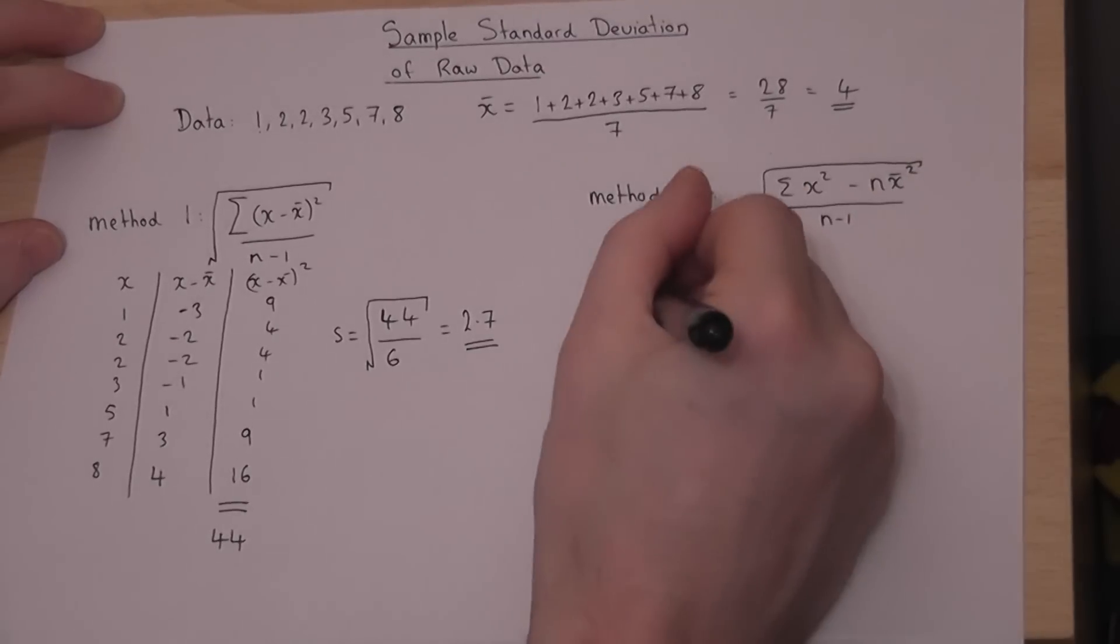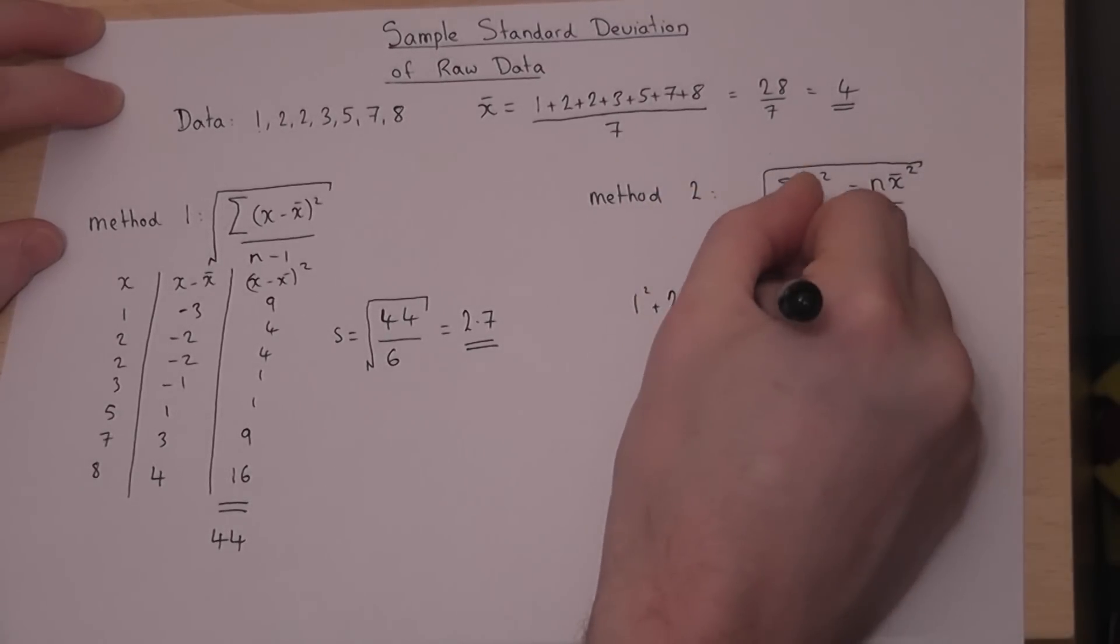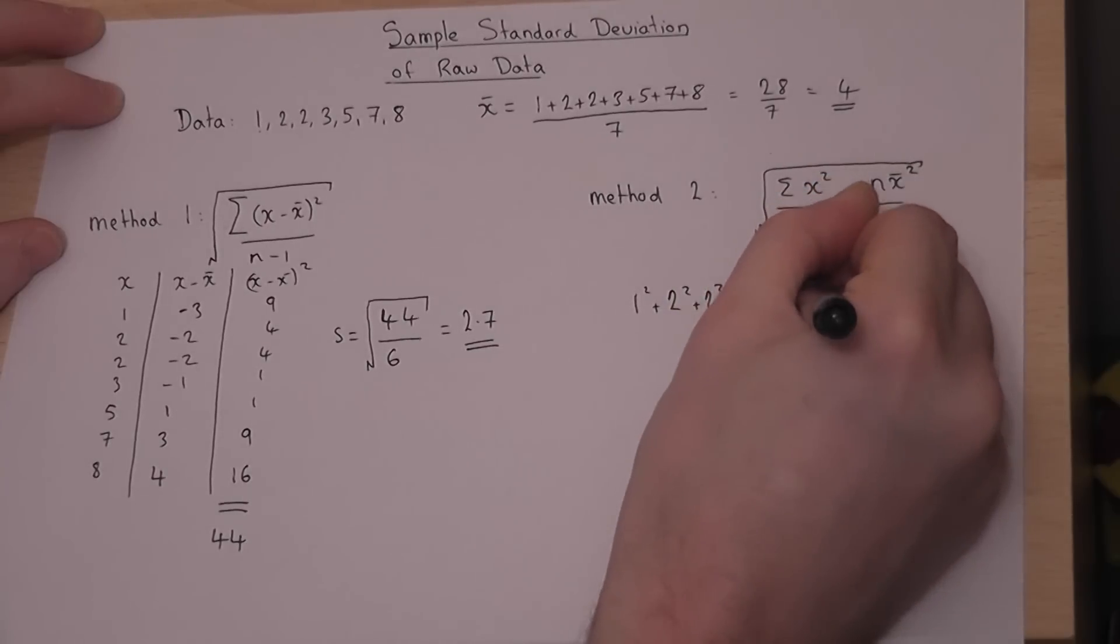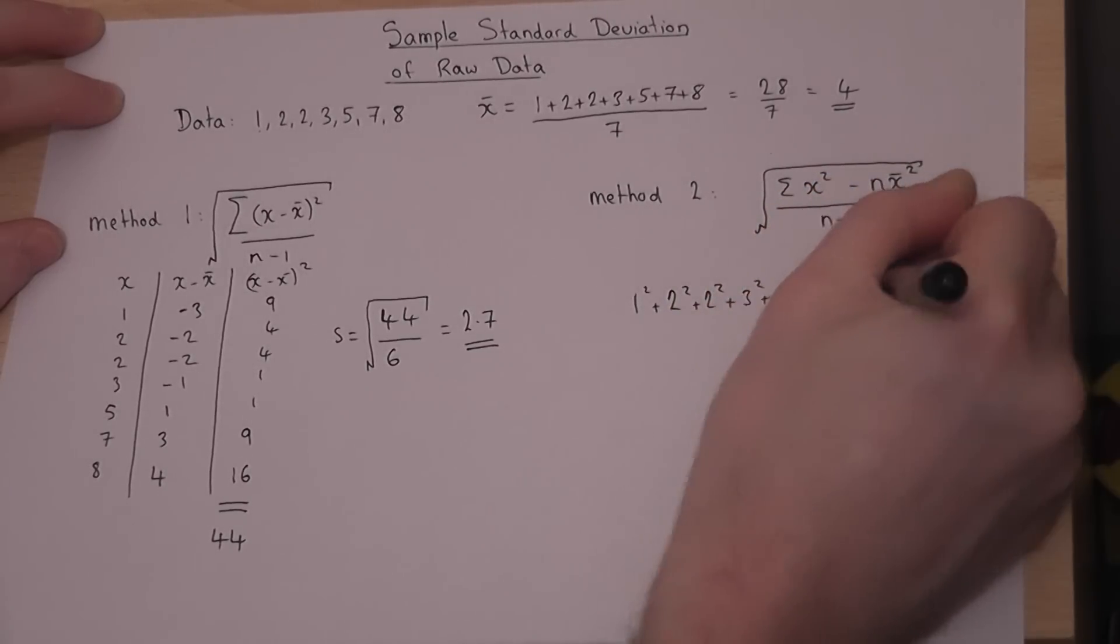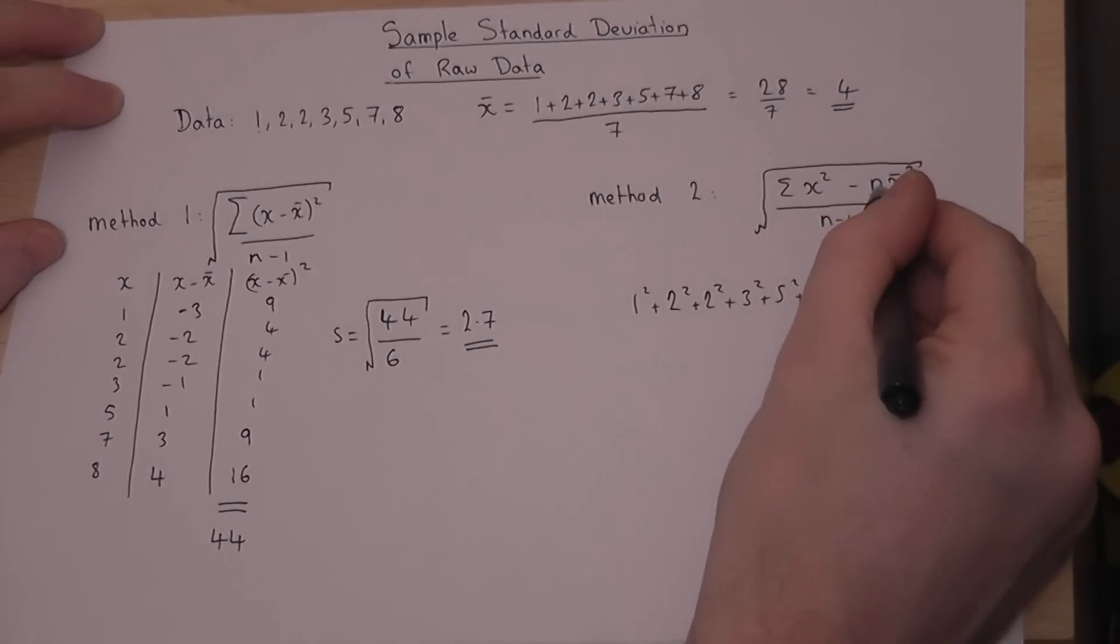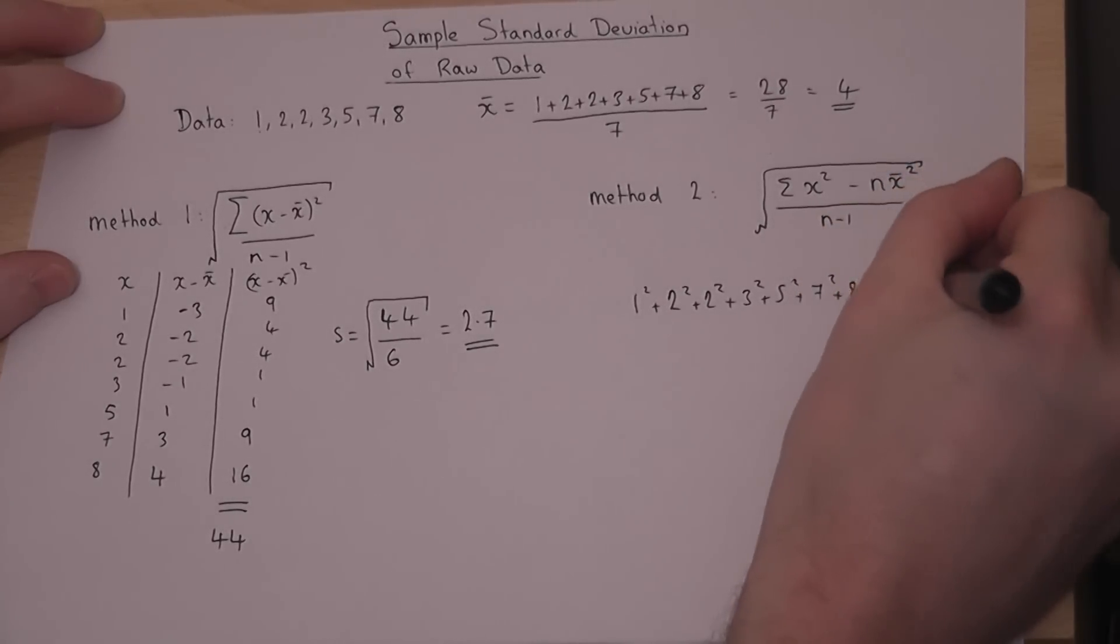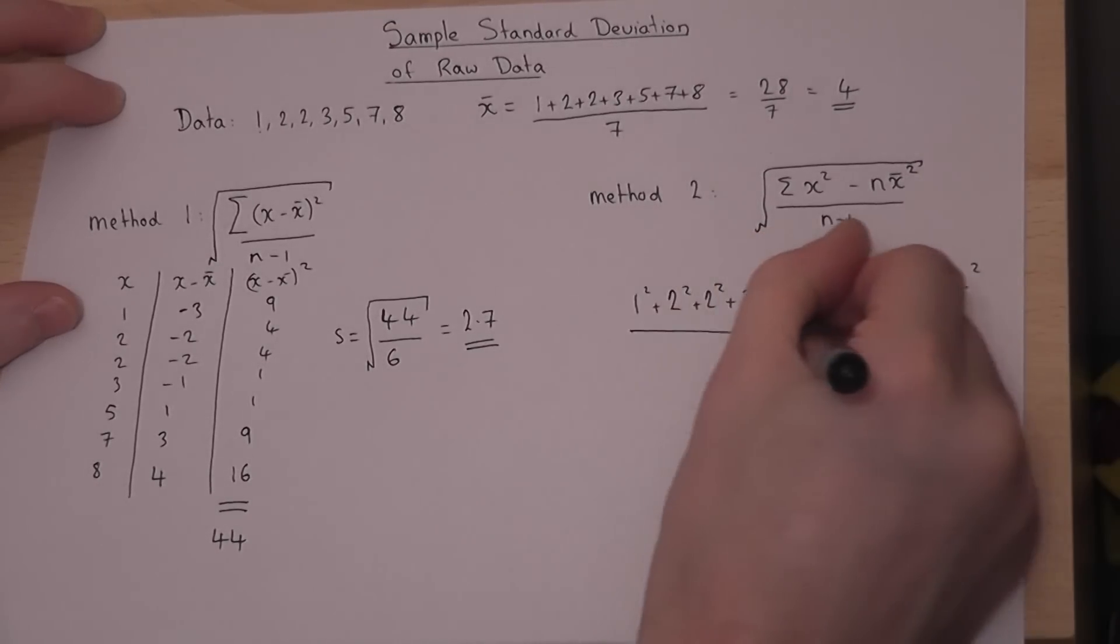So, we have 1 squared plus 2 squared plus 2 squared plus 3 squared plus 5 squared plus 7 squared plus 8 squared. We then take away n, which is 7, times the mean squared, which is 4 squared. We then divide by n take 1, which is 6, and find the square root of all of that.